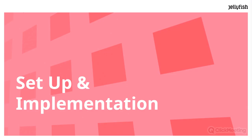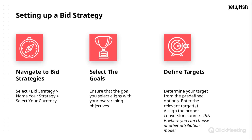Now we've talked about the basics — how do you actually set them up in platform? Bid strategies are really pretty easy to set up. In your left-hand navigation, there is a tab for bid strategies. Once you enter that section, you'll select 'create a bid strategy,' name your strategy, and select the currency. The more difficult aspects are really figuring out your goals and the targets. Make sure your goal aligns with your overarching business objective.